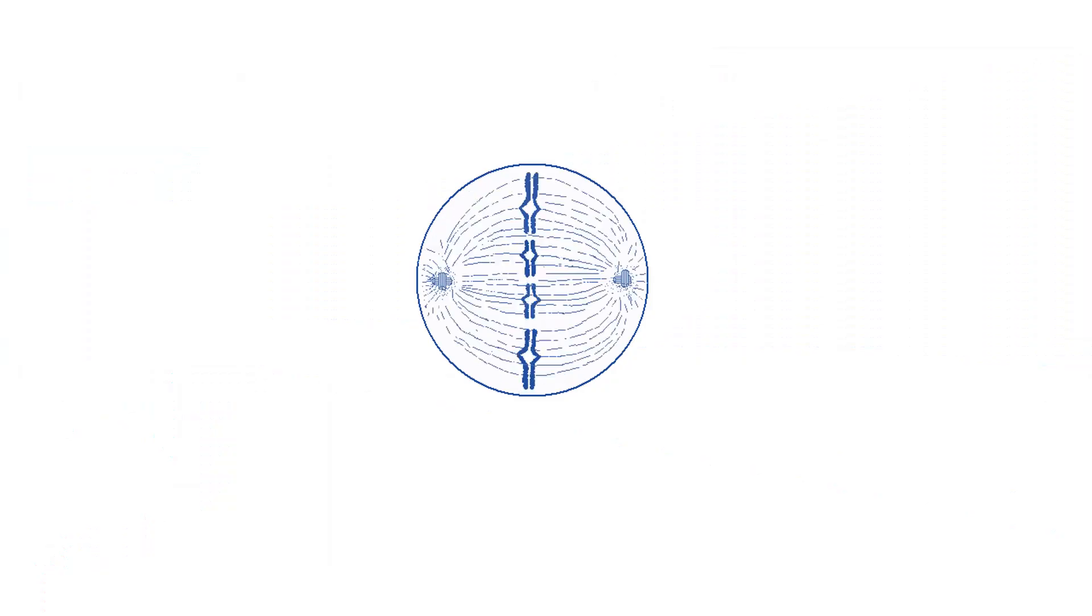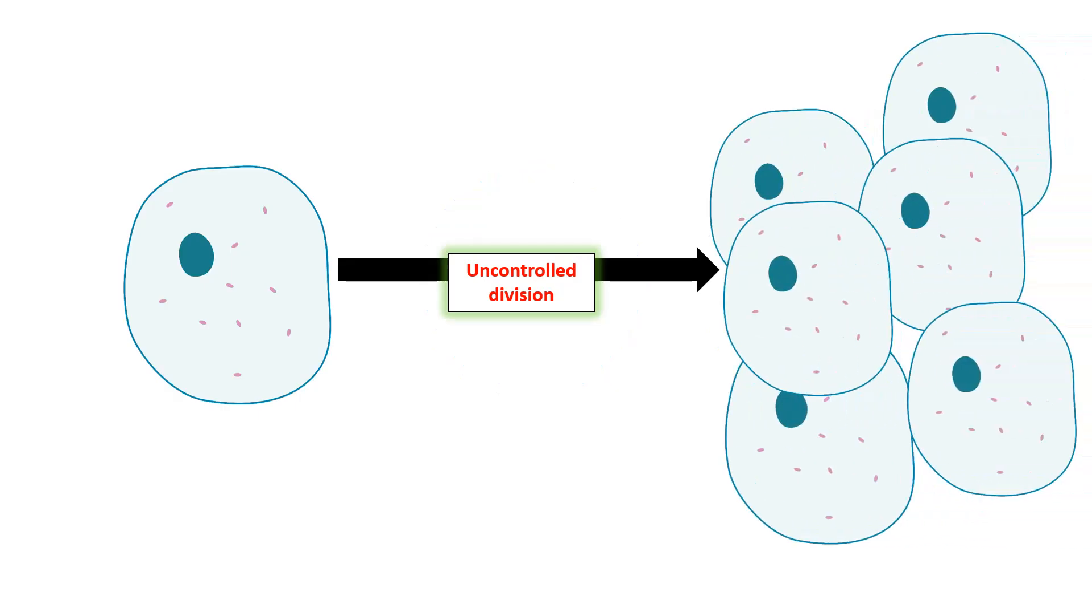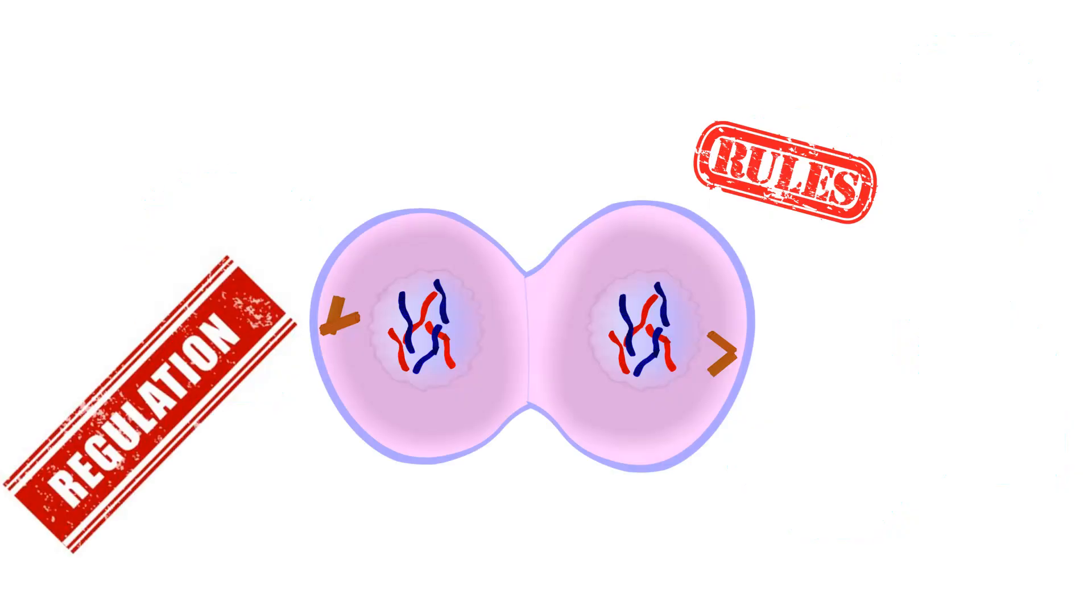In order to make a full-blown organism from a cell, a cell needs to divide. But the cell division process cannot be haphazard. The cell division process needs to be highly controlled because uncontrolled division could give rise to pathological situations like cancer.